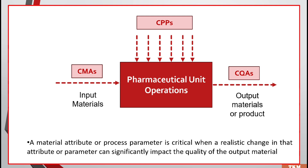A material attribute or a process parameter — when can we call it critical? When a realistic change in that attribute or parameter significantly impacts the quality of the output material. Any change in critical material attribute or critical process parameters that affects the quality of the output material — we call them critical.